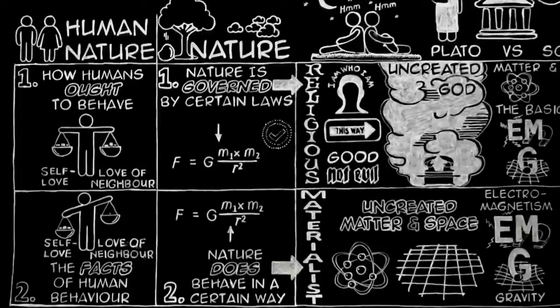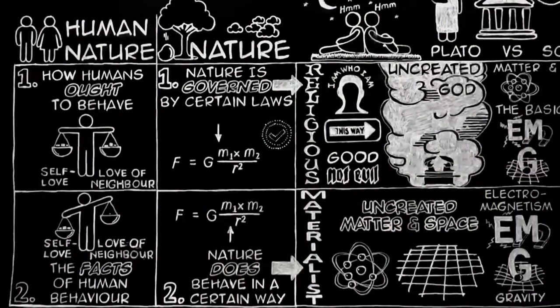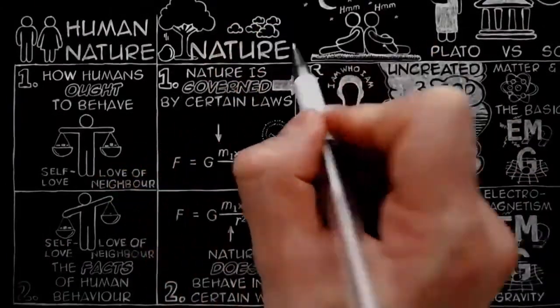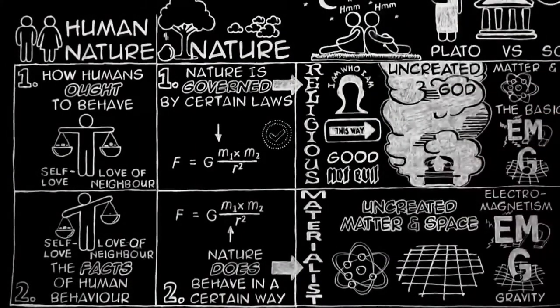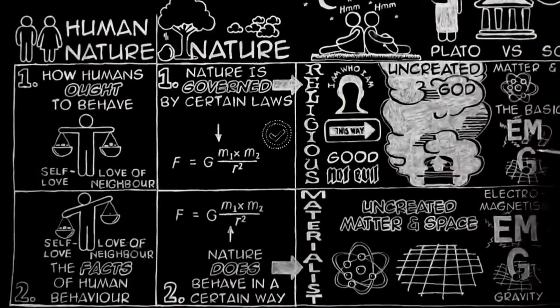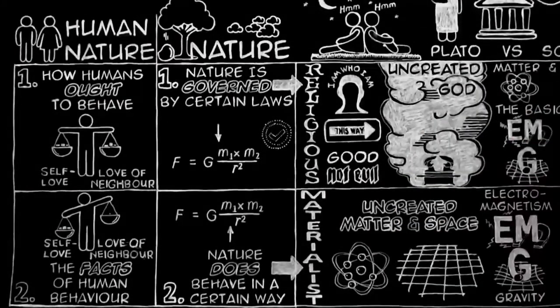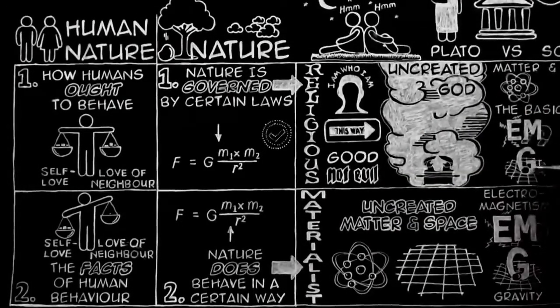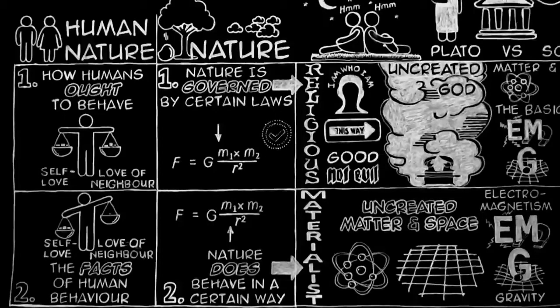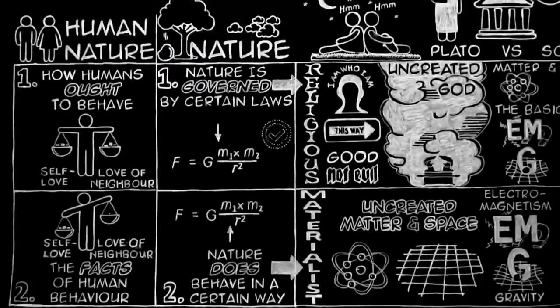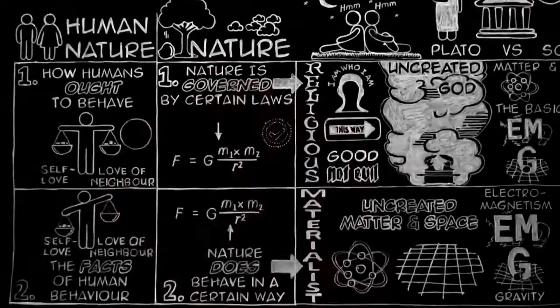The position of the question, then, is like this. We want to know whether the universe simply happens to be what it is for no reason, or whether there is a power behind it that makes it what it is. Since that power, if it exists, would be not one of the observed facts but a reality which makes them, no mere observation of the facts can find it. There is only one case in which we can know whether there is anything more, namely, our own case. And in that one case, we find there is.